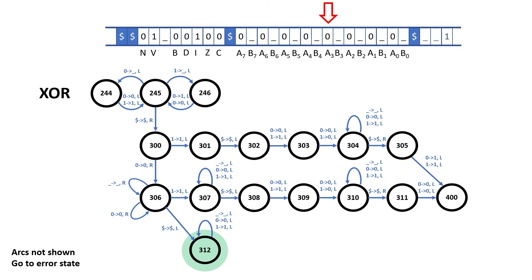From here, we keep stepping left until we hit another dollar symbol. We step over the dollar symbol and the carry flag, and then we write a 1 into the zero flag. We keep stepping left until we hit the dollar symbol. Then we move right one position and write 0 into the negative flag.